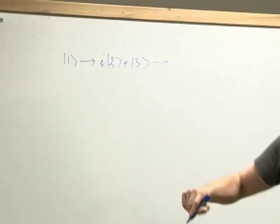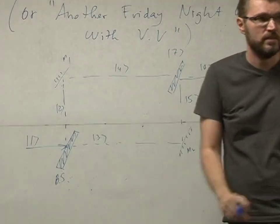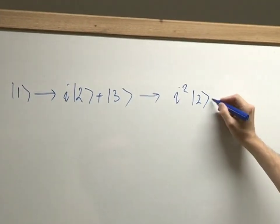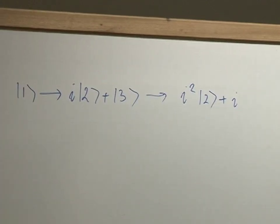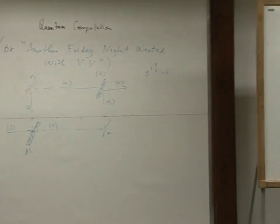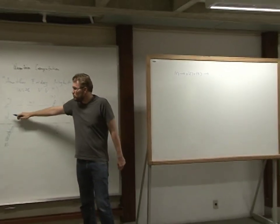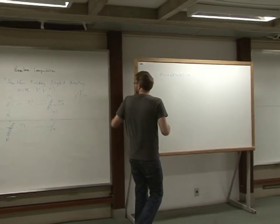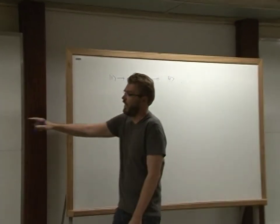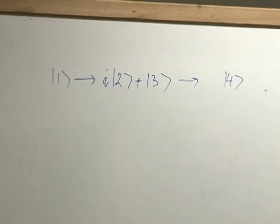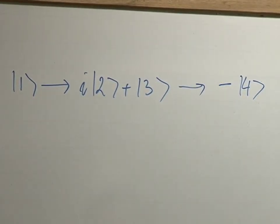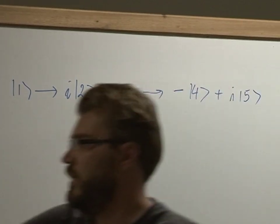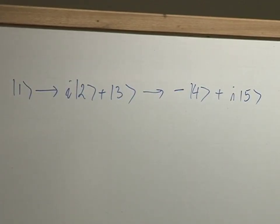Now, what happens to state three? It just gets reflected again from a piece of glass, so there's another phase factor i. So state two goes into state four, gaining an extra i phase — so this gets multiplied by i, and i squared is minus 1. And state three goes into state five, but there is this i phase shift between the two. And now they encounter the same beam splitter at the very end. So I follow both of the paths simultaneously. State four now goes into an equal superposition of states six and seven.